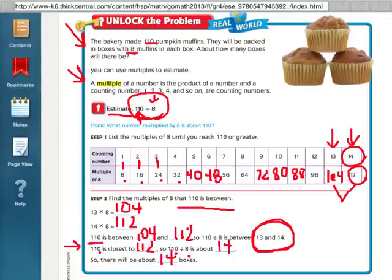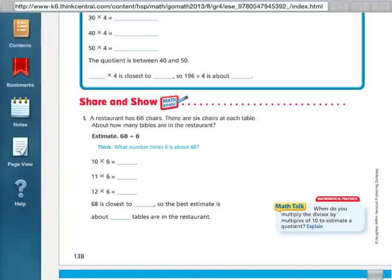So just to recap, this lesson wants us to find estimates or about how much the answer to a division problem would be using multiples. So they're not actually asking you to divide. They're asking you to count by the number and see what two numbers it's closest to or between and then choose which one it's closest to to find about how many.